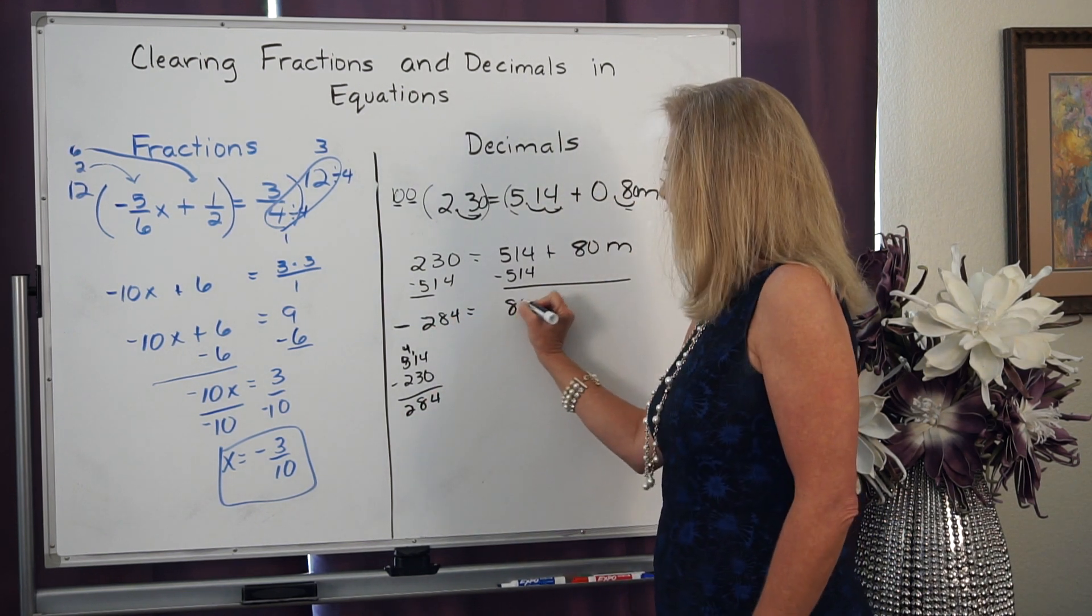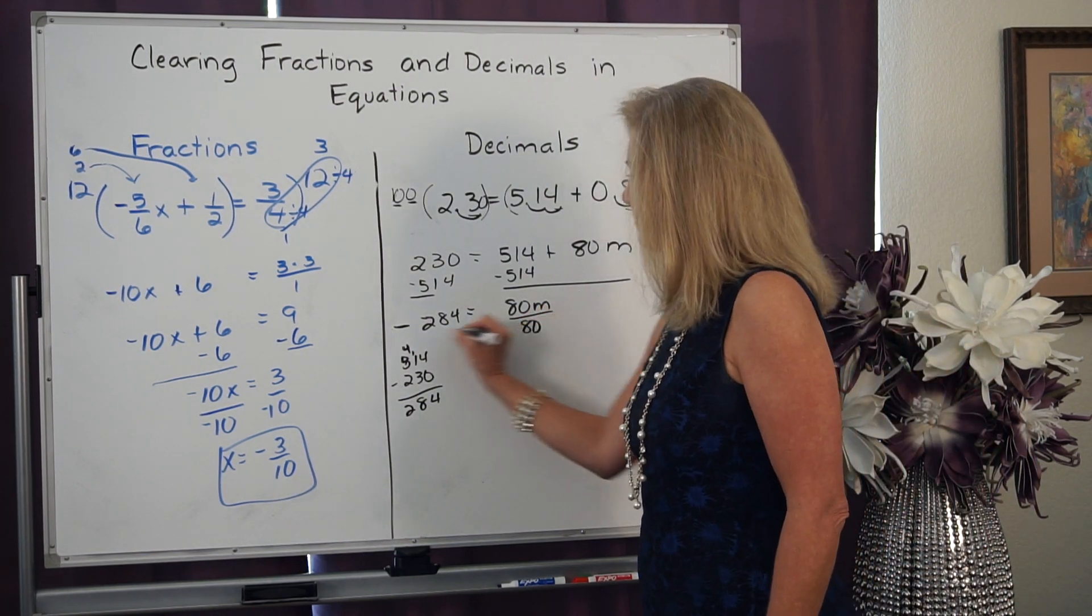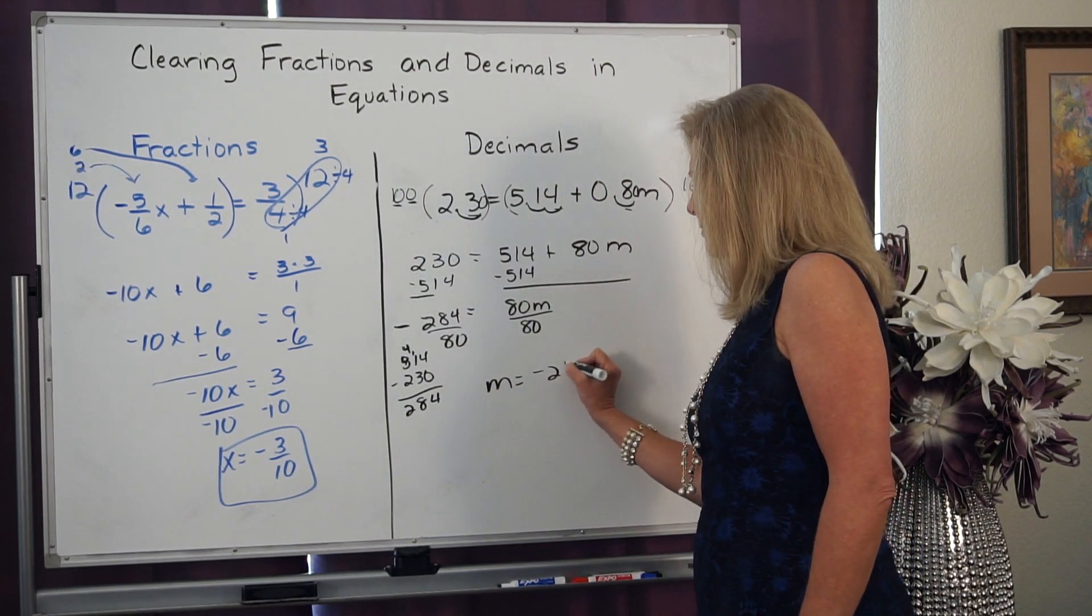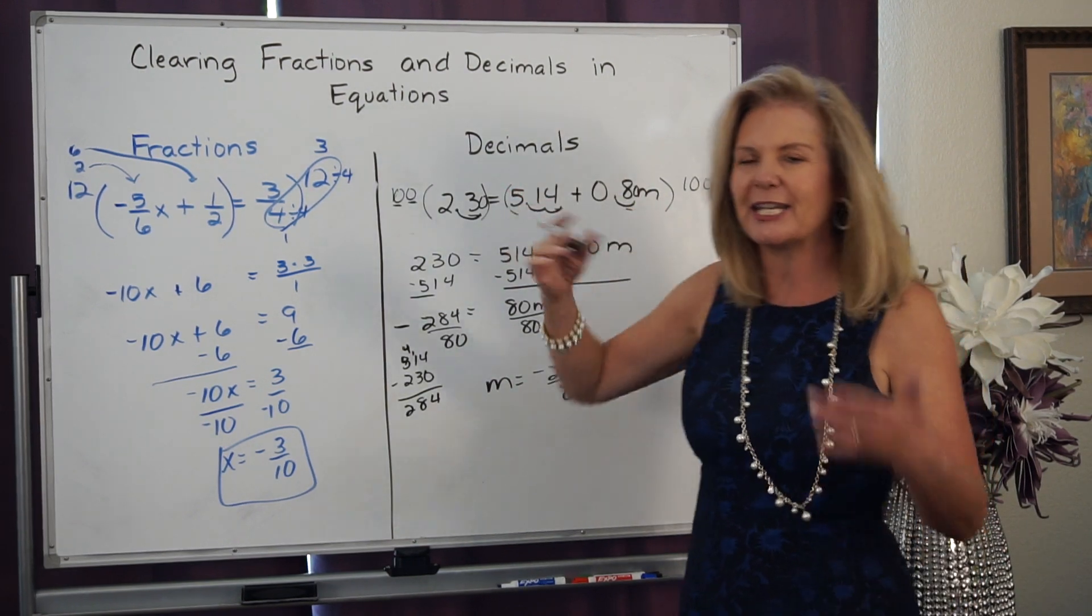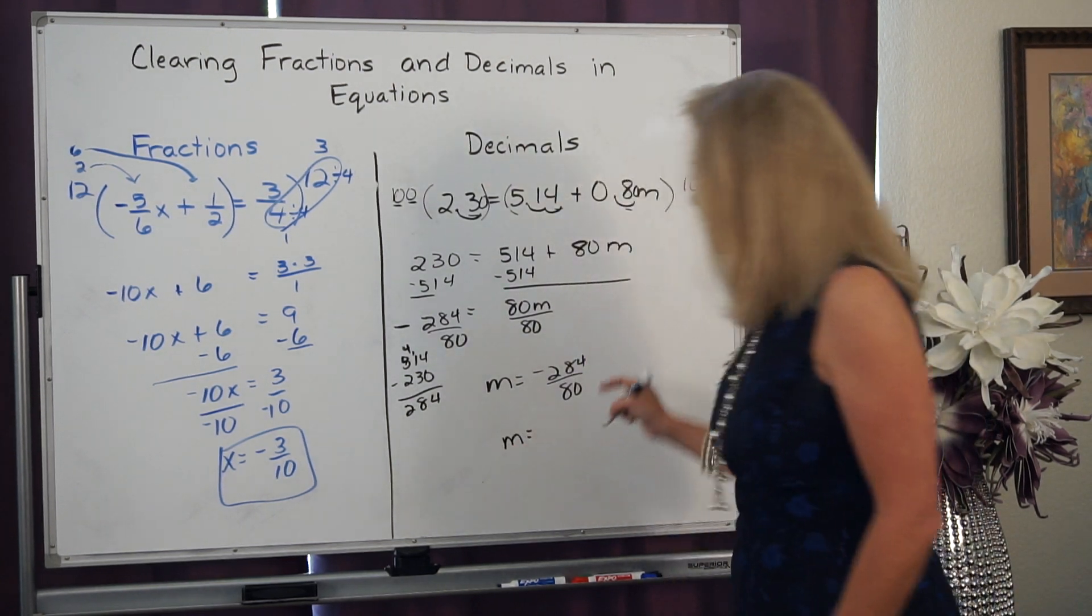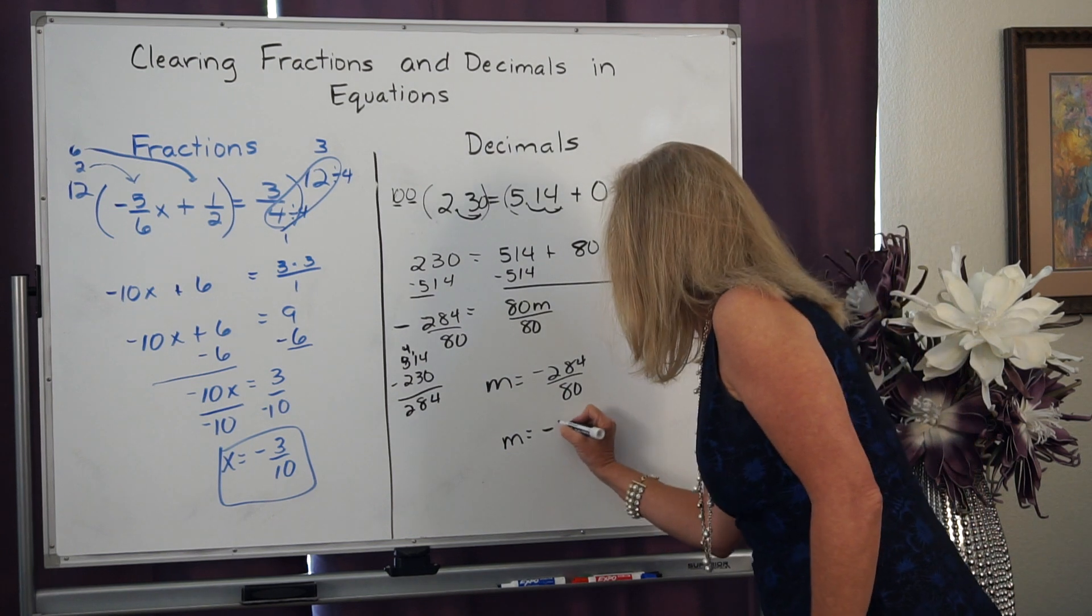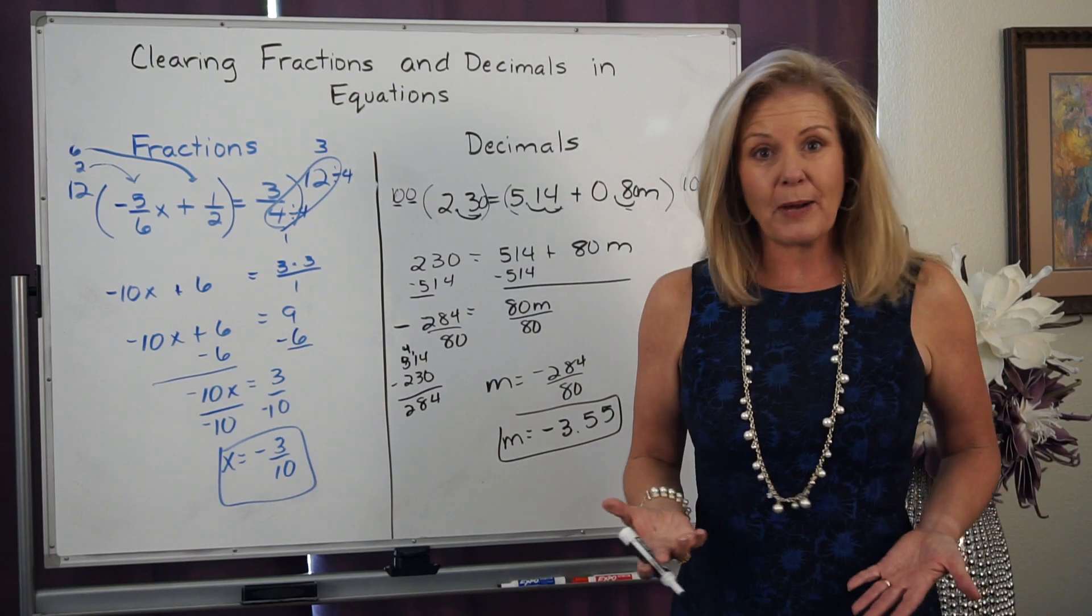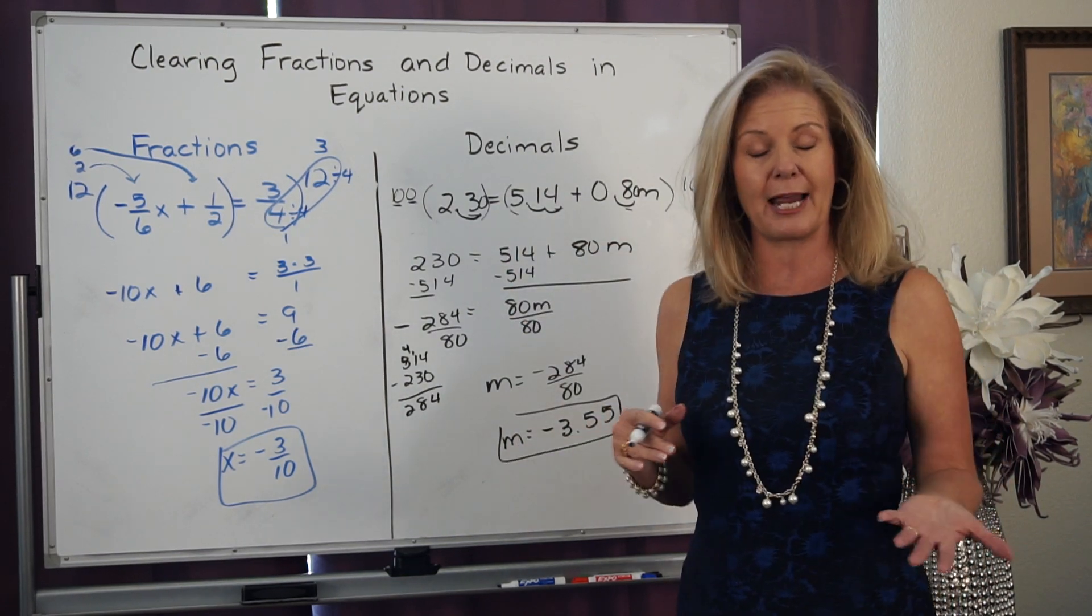Now, at this side, I still have 80m. So in order to get m by itself, I'm going to divide by 80 on both sides. So m equals negative 284 80ths. Now, remember, if I start with decimals, I should end with decimals. So if I take a calculator and I actually put negative 284 divided by 80 in, I get negative 3 and 55 hundredths.